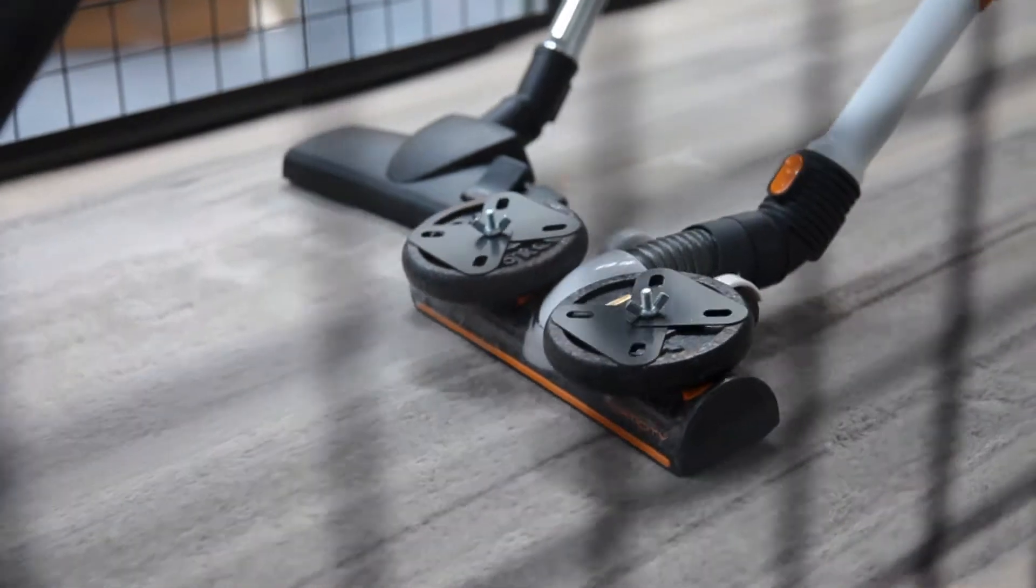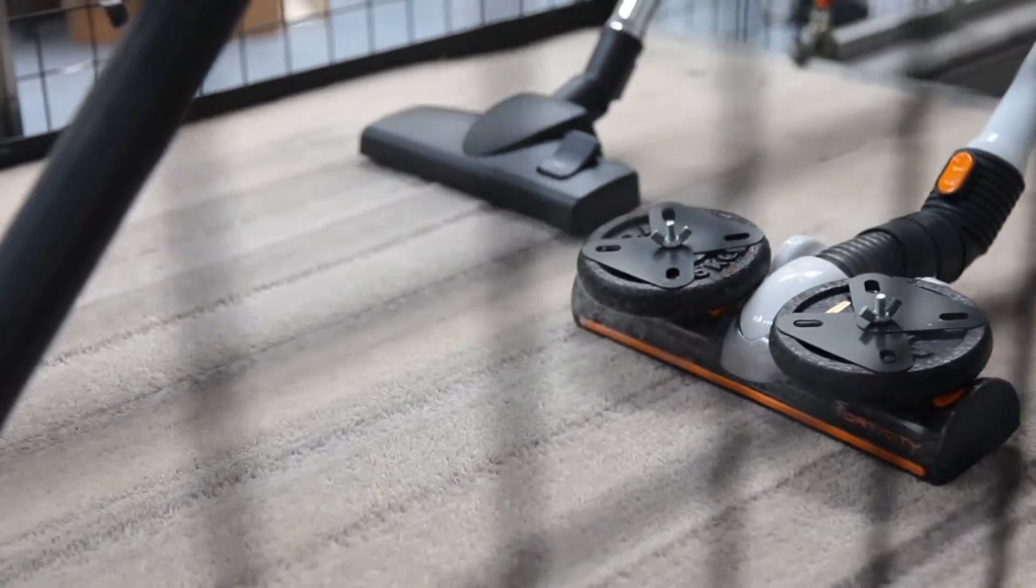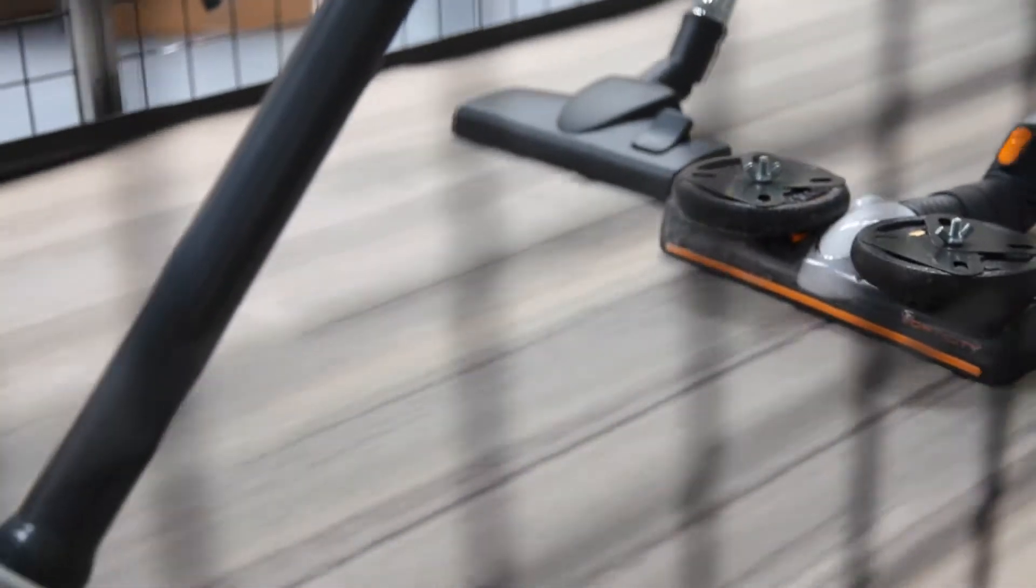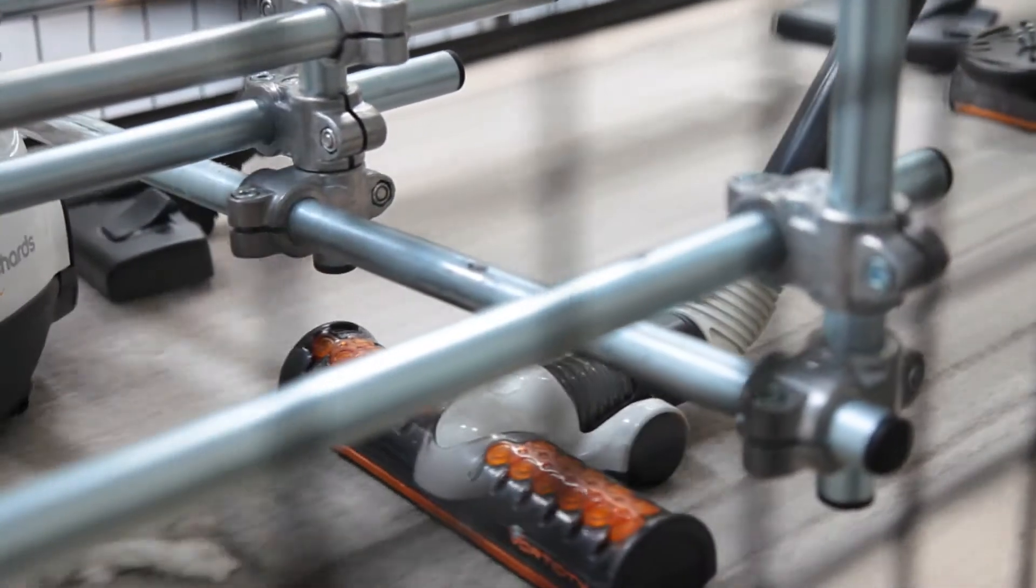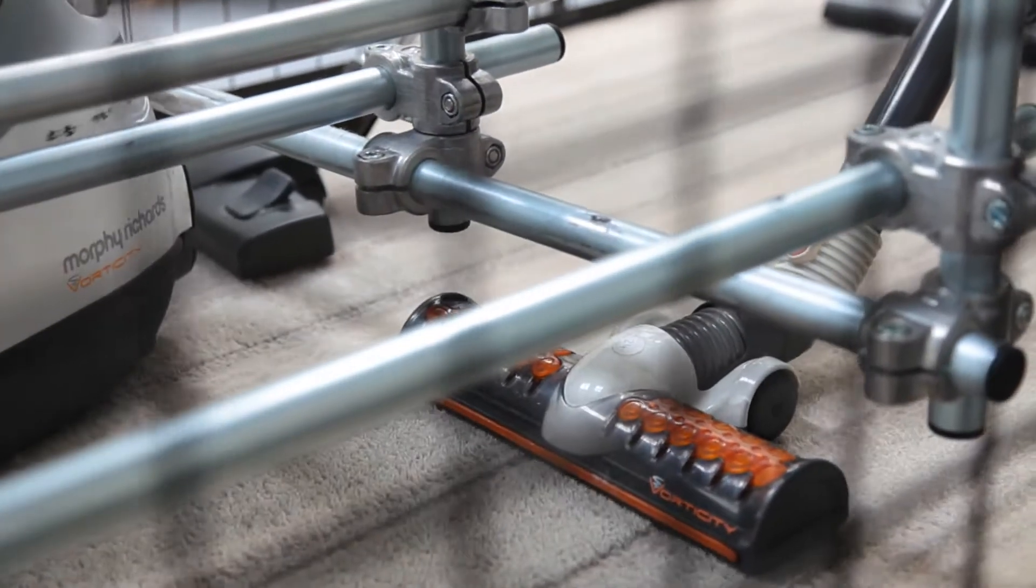This has got extra weights on it just to test the pivots a little bit more vigorously. Now our minimum requirement or specification for the Vorticity product is 500 hours. We're actually exceeding that on average. We're going above 600 hours in terms of its lifespan.